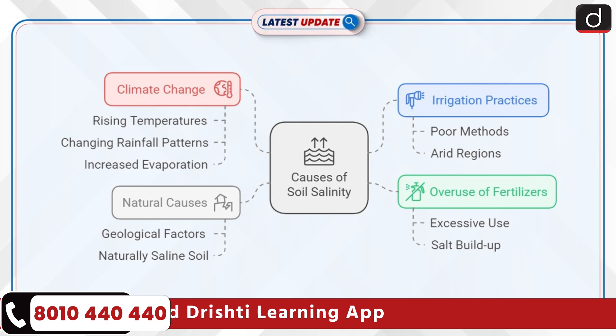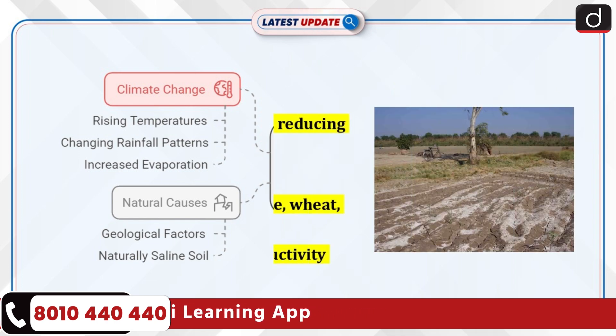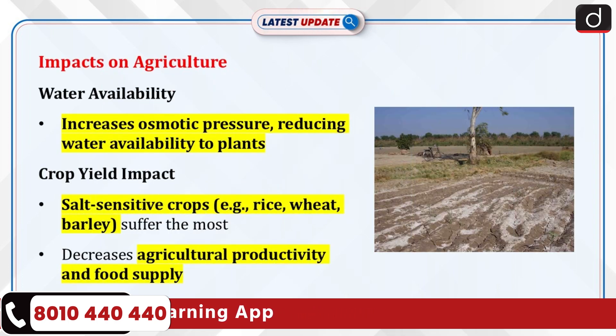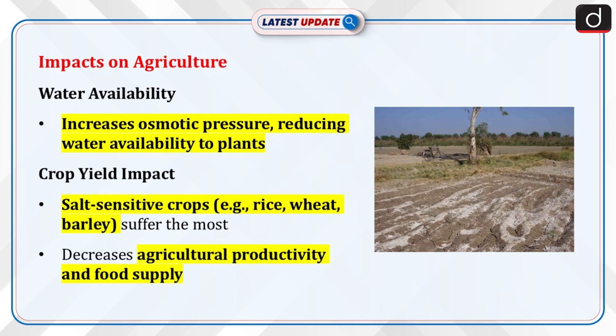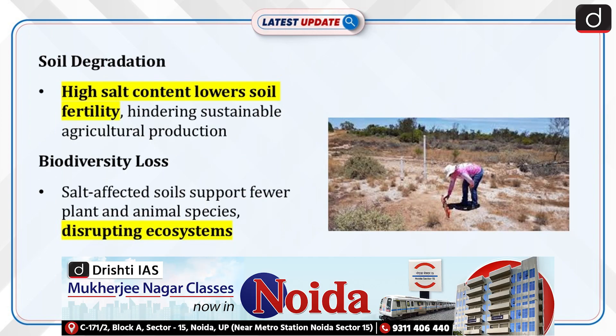Now let's talk about impacts on agriculture. Excessive salinity reduces the availability of water to plants by increasing soil osmotic pressure. Crop yield is severely impacted, with salt-sensitive crops like rice, wheat, and barley being the most affected.